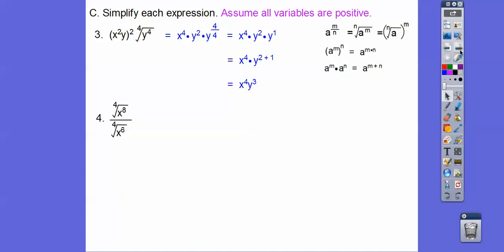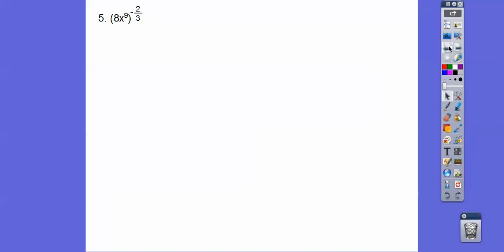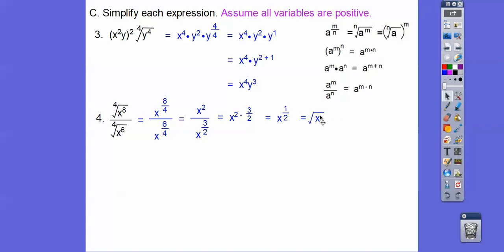All right, so here we have the fourth root of x to the eighth over the fourth root of x to the sixth. Let's put those in rational exponents, eight-fourths and six-fourths. Now we can subtract those. Well, we can simplify that also, or we can subtract them, whichever way. Eight-fourths is two. Six-fourths reduces to three-halves. Now we're going to subtract two minus three-halves. So we've got to get common denominator again. This is four over two minus three over two is one over two. Now, typically, if it starts off with radicals, then end this as a radical. So square root of x right there. Let me go back. It's understood there's a power of a one there. It's understood there's an index of a two right there, so you don't need to have them there.